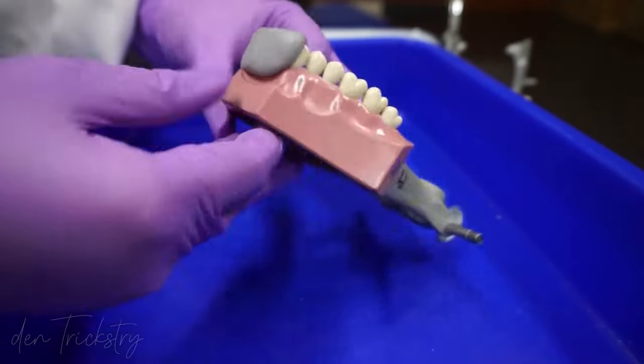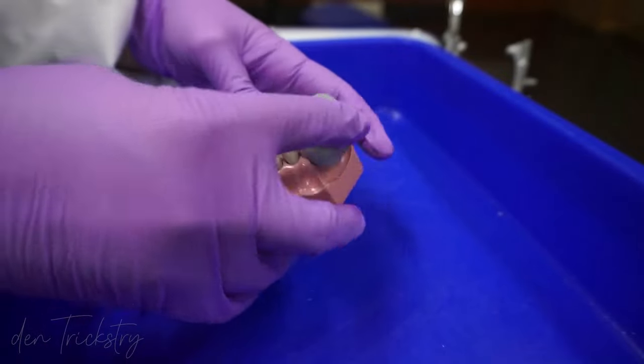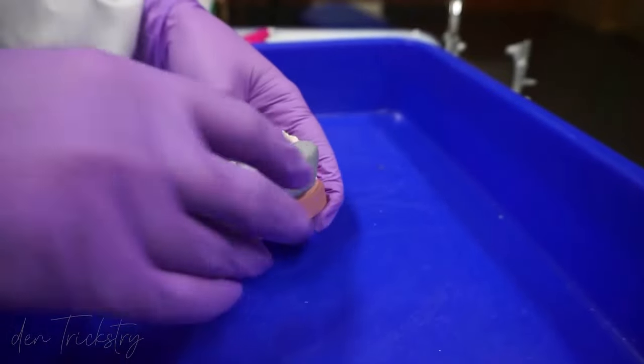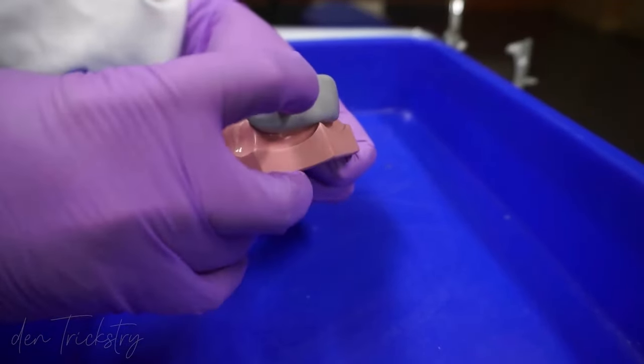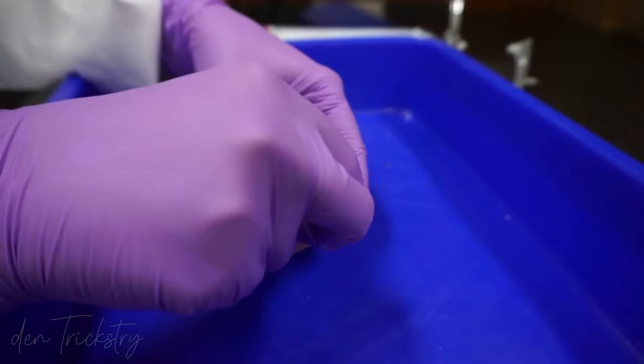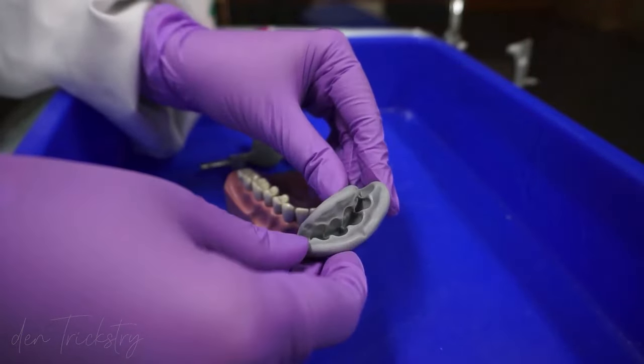Gently press the material all over on the labial, palatal and occlusal surfaces so that our area of interest is captured accurately in the index. Let the material set, confirm that there is no indentation on the putty. Once set, remove the index and inspect that all the teeth have been captured properly.